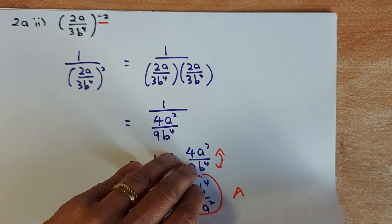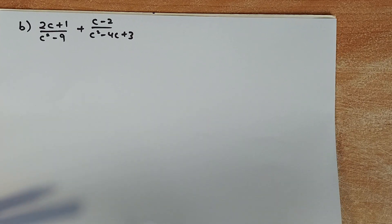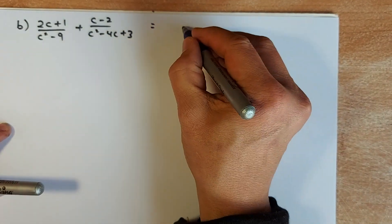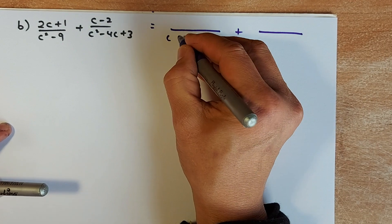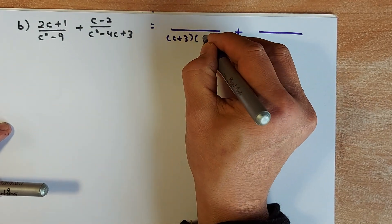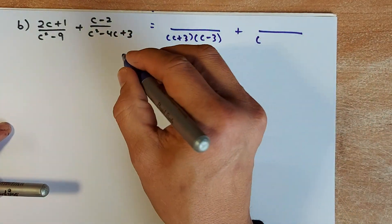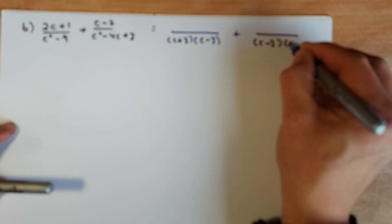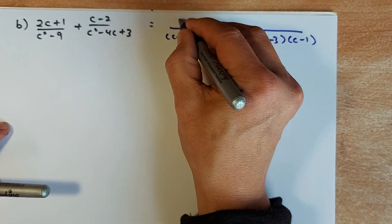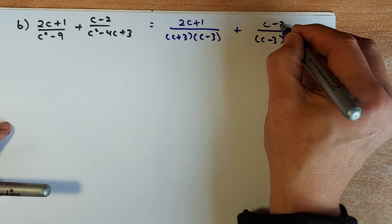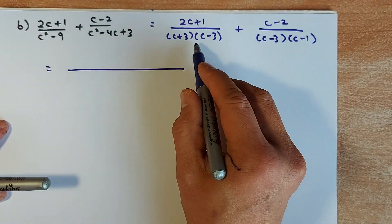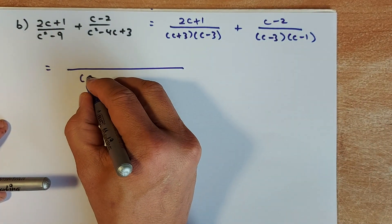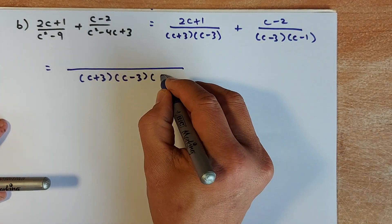The next question is perhaps the hardest and longest — and it is a merit. The first thing I would do is factorize the first and second fractions. The first fraction, c squared minus 9, is a difference of two squares: (c + 3)(c − 3). Similarly, the second fraction factorizes using trial and error as (c − 3)(c − 1). The numerators remain as 2c + 1 and c − 2. Now you need a common denominator that divides all three, which is going to be (c + 3)(c − 3)(c − 1).